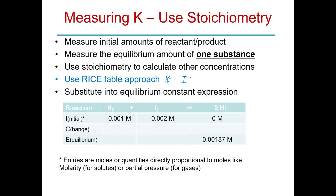For equilibrium problems we use what's called a RICE table — some people call it an ICE table. It's an acronym. The row headings spell out RICE: R stands for Reaction, so the first row lists the reaction. I stands for Initial — technically these values should be in moles, but you can use any property directly proportional to moles, such as molarity or partial pressures for gases. You can even use volumes for gases through the ideal gas equation.